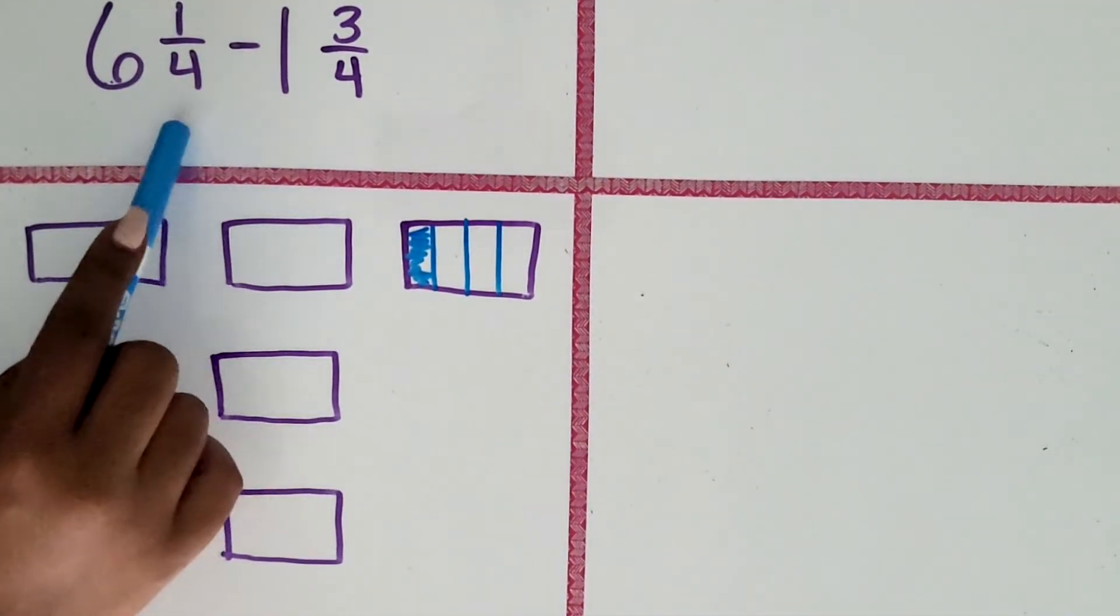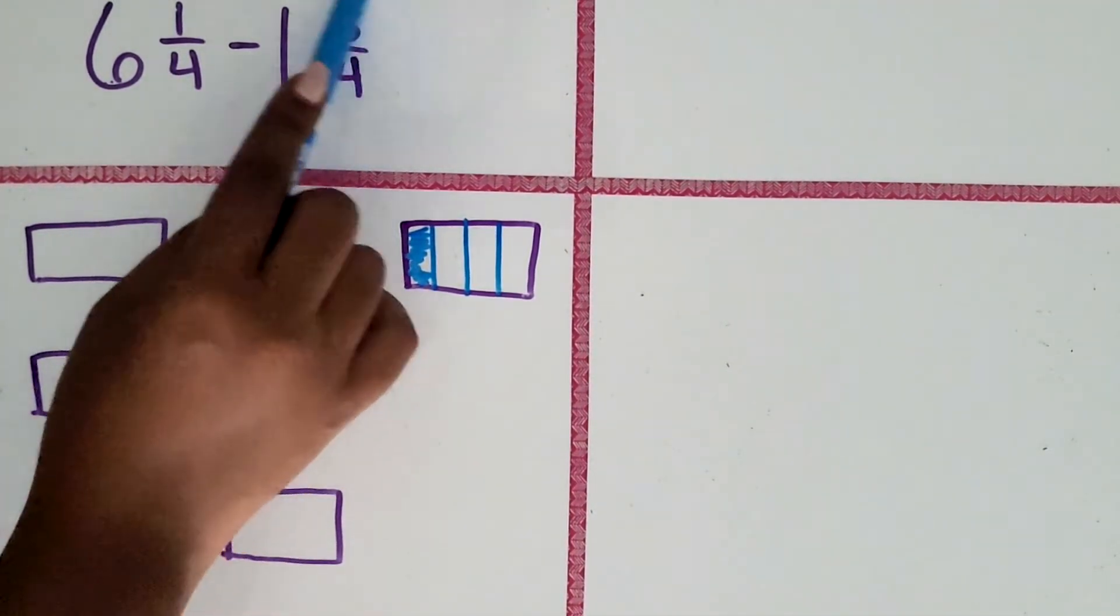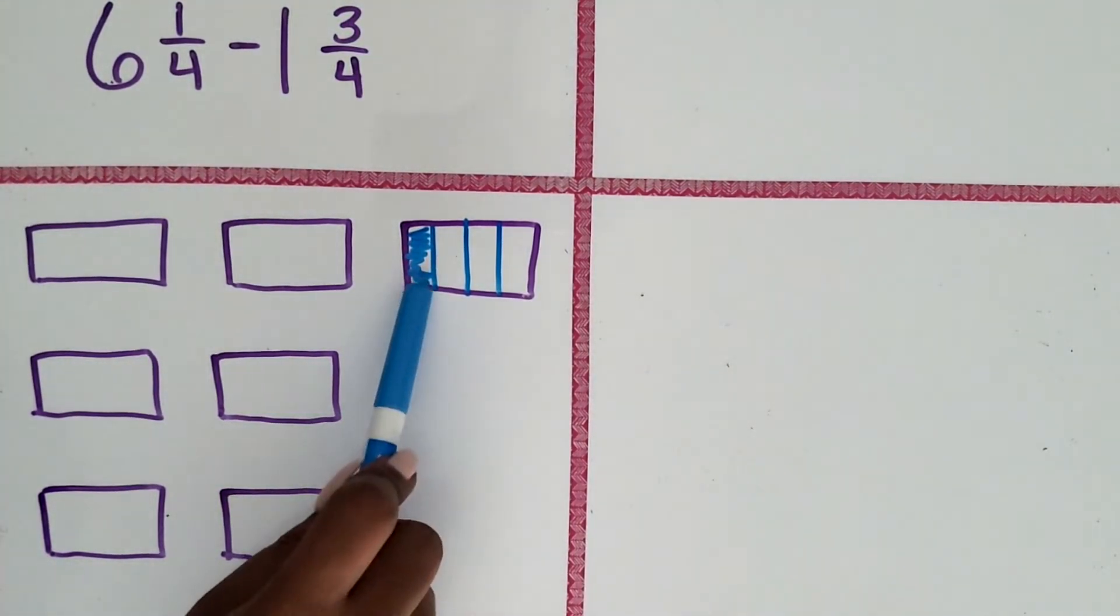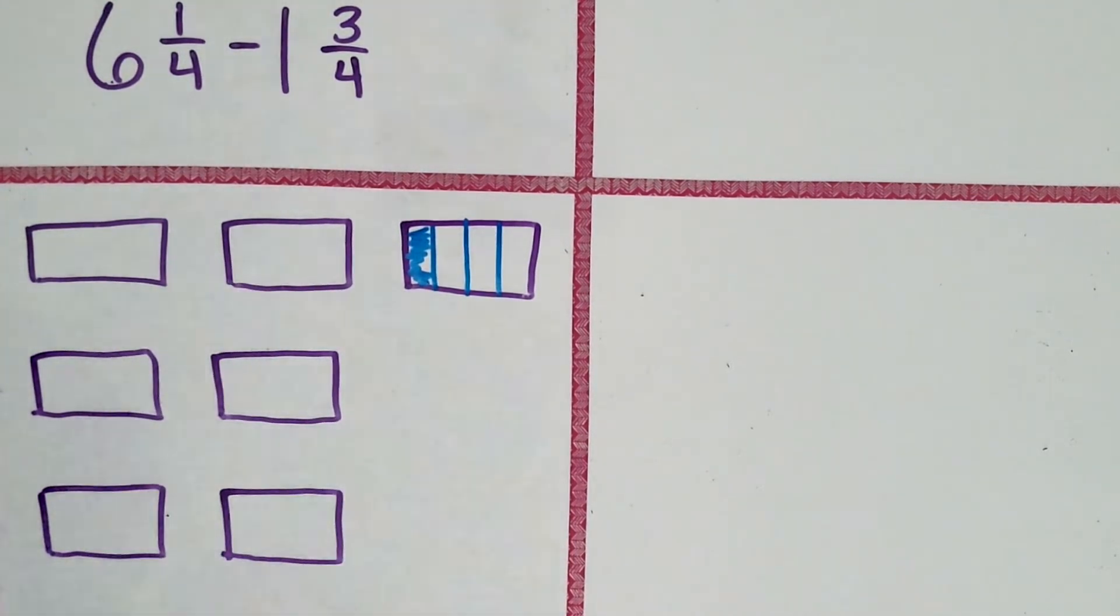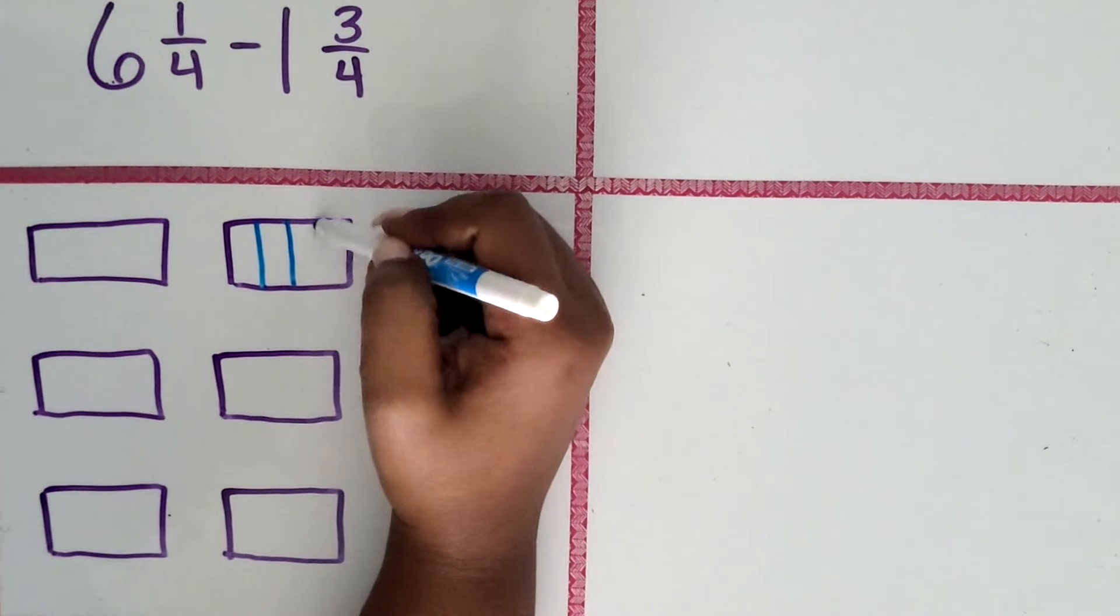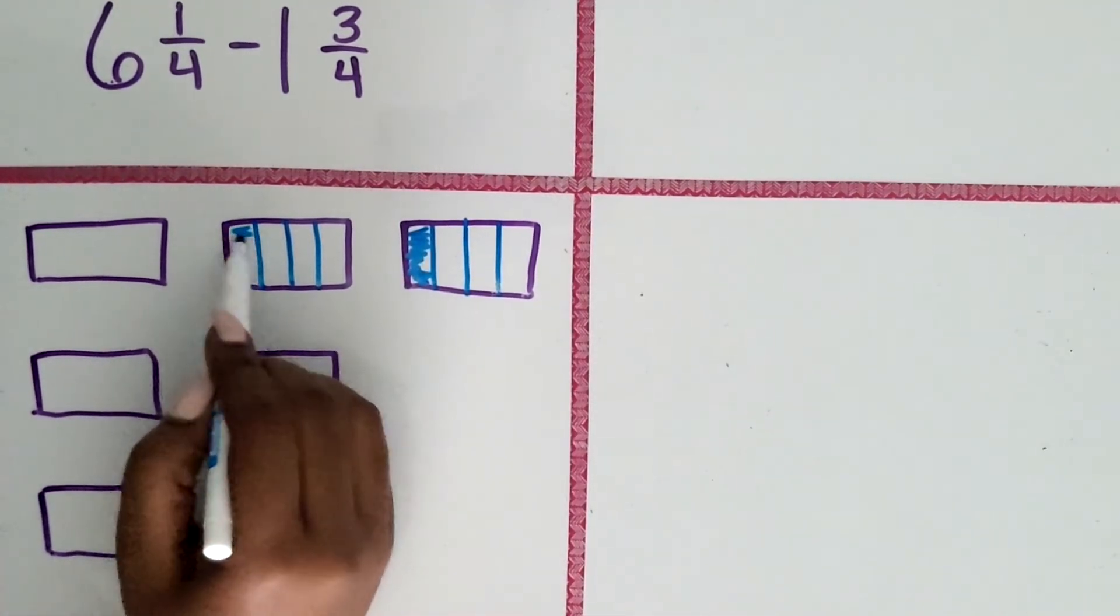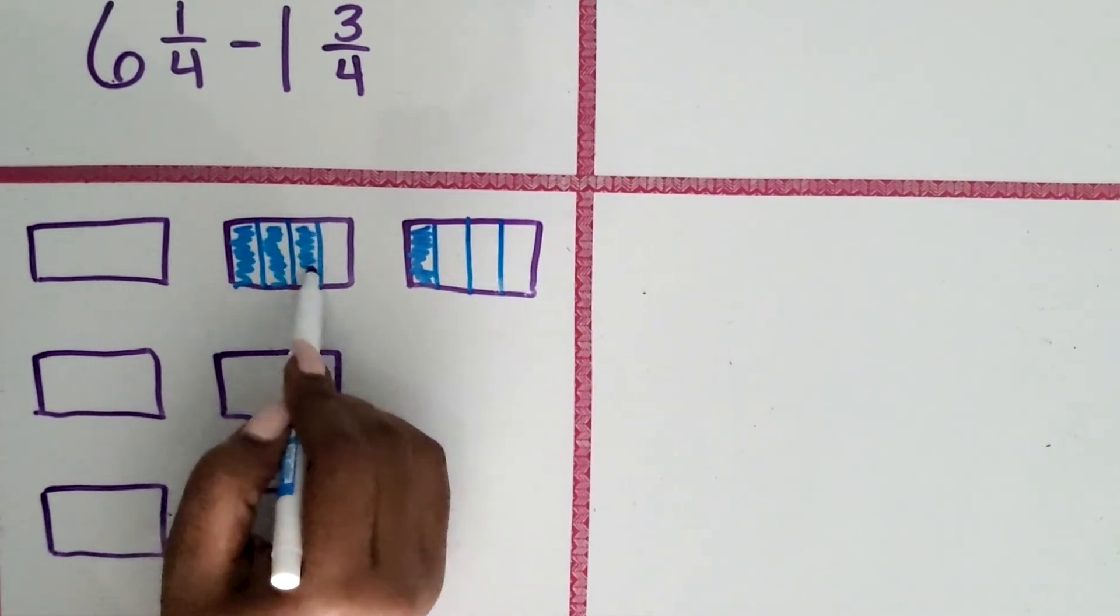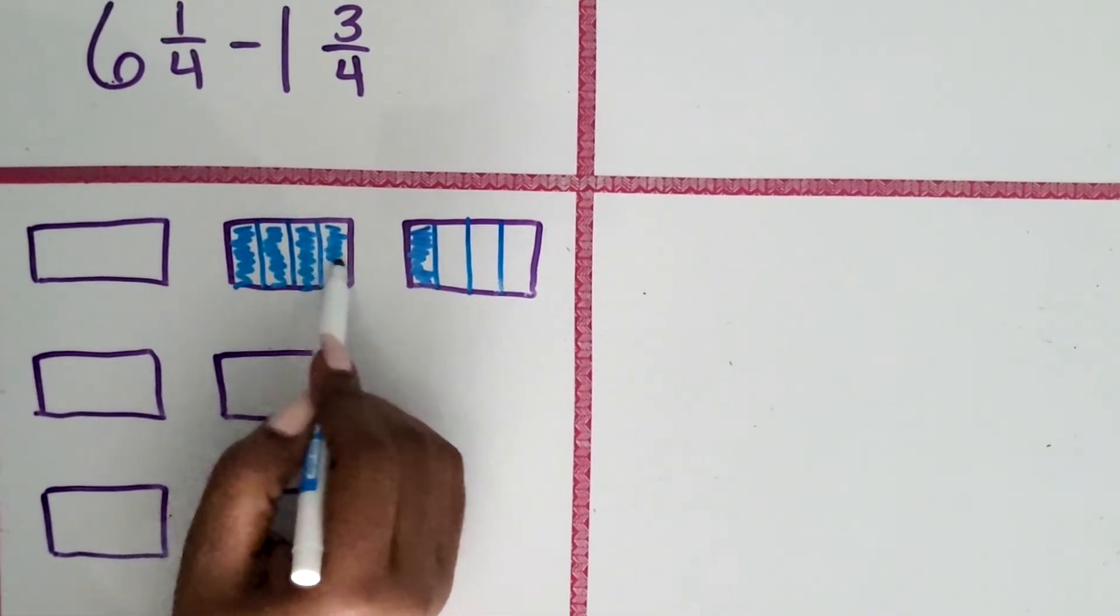So we have six and one-fourths. Now we want to subtract one and three-fourths. So we're going to subtract the three-fourths. We only have one-fourth to subtract from, but we need to subtract three-fourths. So we're going to take one of those wholes and break those into equal parts, four-fourths. We're going to shade them all in to show four-fourths. We're using four-fourths of that whole.